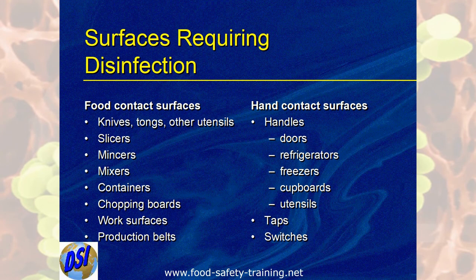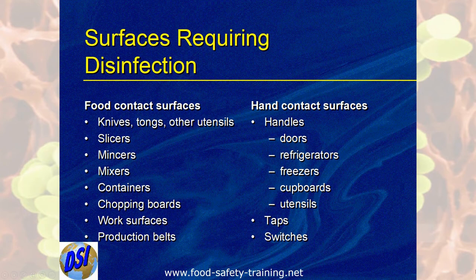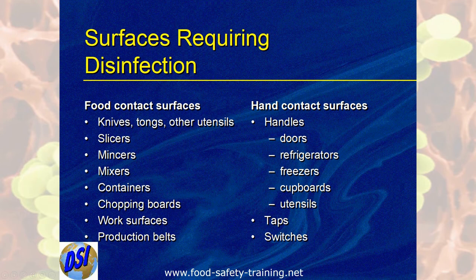Not all surfaces require disinfection — floors, walls, and ceilings do not require disinfection. Two areas that do require disinfection are food contact surfaces and hand contact surfaces. Remember those because it's another key question. What comes into contact with food? Knives, tongs, other utensils, slicers, mincers, mixers, containers, chopping boards, work surfaces, and production belts — all have the potential to come into contact with food.